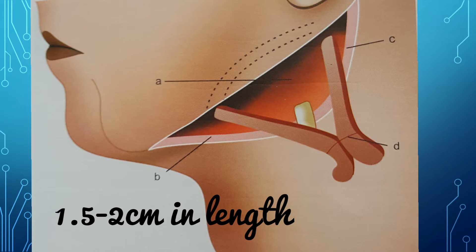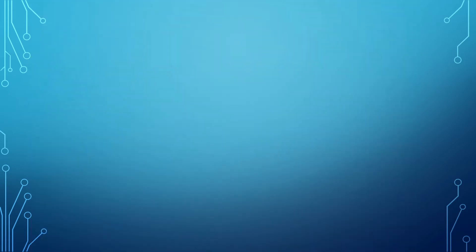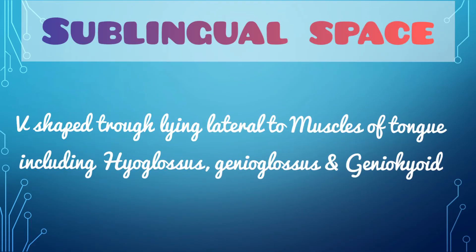The management of submandibular space infection includes incision and drainage. The incision is about 1.5 to 2 centimeters, made 2 centimeters below the lower border of the mandible. The next mandibular space is the sublingual space, which is a V-shaped structure lying lateral to the muscles of the tongue including the hyoglossus muscle, genioglossus muscle, and geniohyoid muscle.